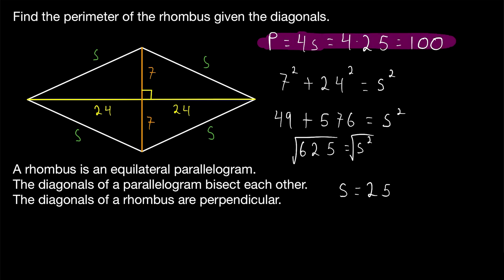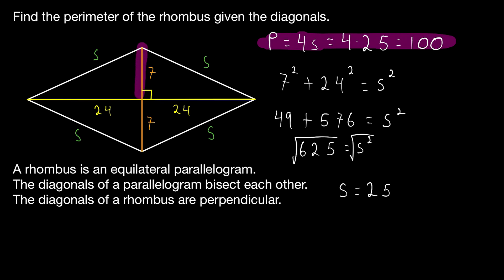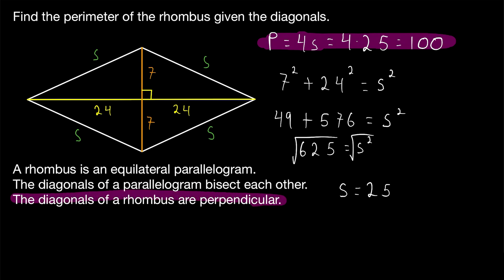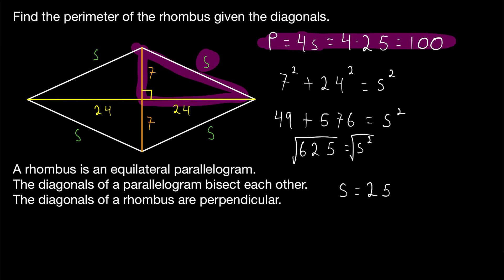Let's go through it again quickly. How do we find the perimeter of a rhombus given the diagonals? The diagonals of a rhombus bisect each other, so if you're given the full diagonal lengths, each piece is half of its respective diagonal. Also remember that the diagonals of a rhombus are perpendicular, so the diagonals cut the rhombus into four congruent right triangles. Applying the Pythagorean theorem to any of those right triangles gives you the side length. Since a rhombus is equilateral, multiply that side length by four — that's the perimeter.